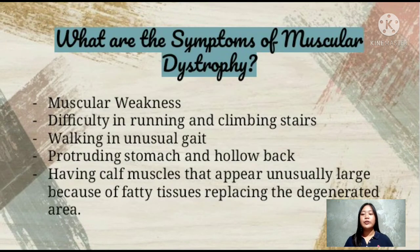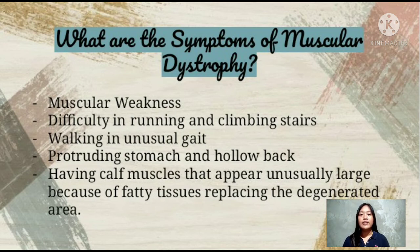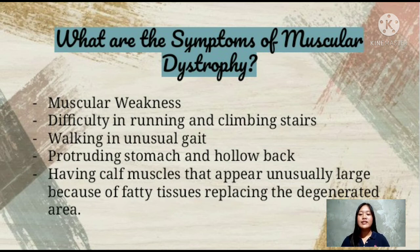The symptoms of muscular dystrophy include muscular weakness, difficulty in running and climbing stairs, walking with an unusual gait, protruding stomach and hollow back, and calf muscles that appear unusually large because fatty tissue replaces the degenerated muscle area.